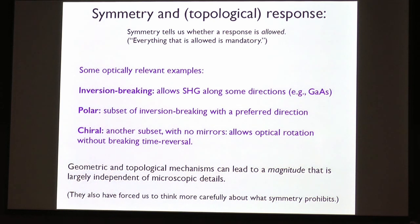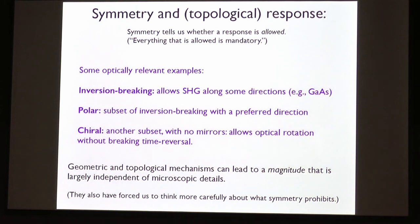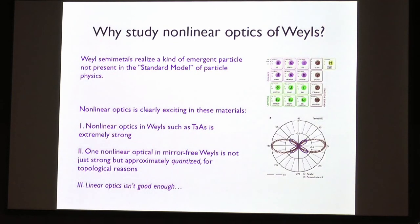Chiral materials are a different subset of inversion-breaking where there are no mirror symmetries. One property is that you can have optical rotation — analogous to the Faraday effect — where light passes through a material and the plane of polarization rotates, without needing to break time reversal. We've known a lot about crystal symmetries for more than a hundred years, but the modern geometrical and topological aspects give additional information.